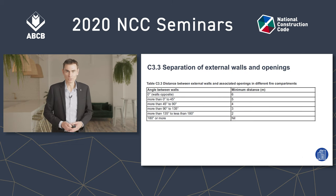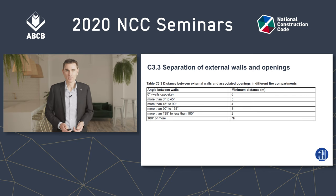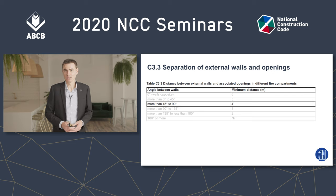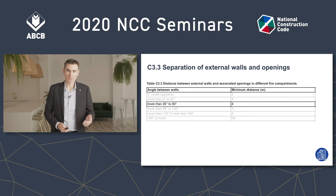Let's have a look at what the BCA has to say. If you're thinking those walls and windows need protection, you're likely thinking about this table in C3.3 — specifically that the walls are intersecting at 90 degrees, and so for the first four metres from that intersection we need to have an FRL of 60-60-60 and that those windows need protection.